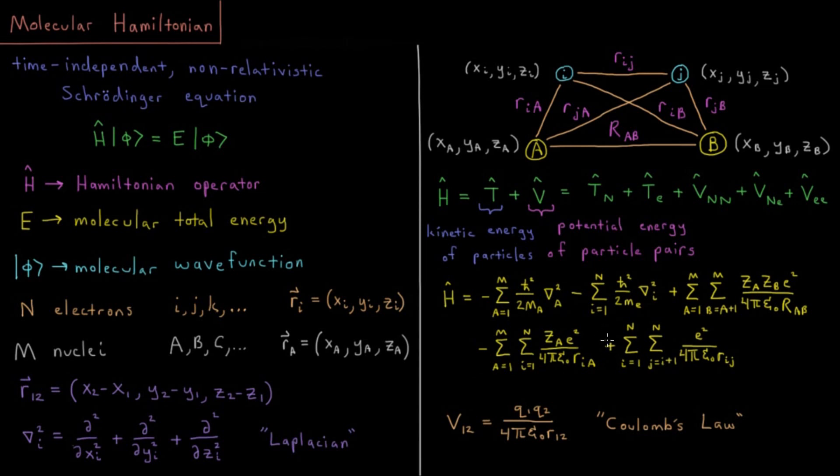Lastly, we close with electron-electron repulsion, the term that's going to cause us the most difficulty over this and all remaining chapters in this course. We're adding because it's a repulsion increasing energy. Sum i=1 to N, sum j=i+1 to N. That's all pairs of electrons.